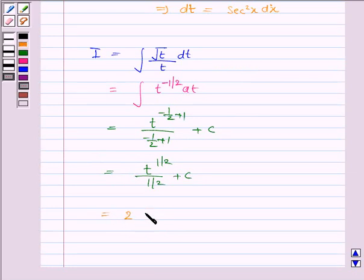So this is equal to 2 into root t plus c. Now t is tan x so this becomes 2 into root tan x plus c.